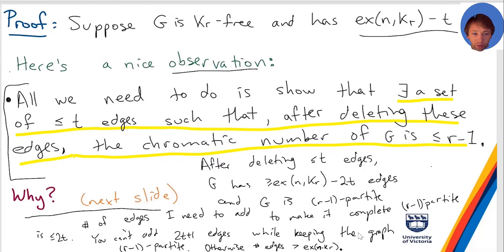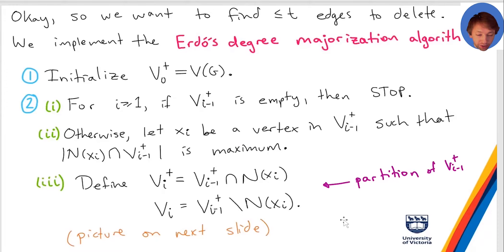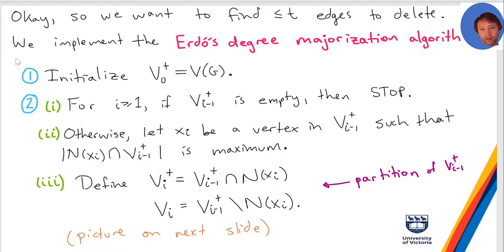So all we need to do is find t edges we can delete such that the chromatic number after deleting is at most r−1. That's our goal: we have a graph, we want to find t edges to delete such that the chromatic number becomes at most r−1.